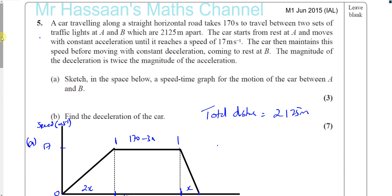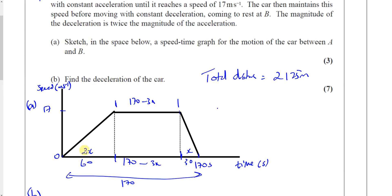The key for this question was to realize that if the magnitude of the deceleration is twice the magnitude of the acceleration, then it will take half the time to go from 17 to 0 compared to the time it took to go from 0 to 17. That's the key for this question. Thank you for watching.